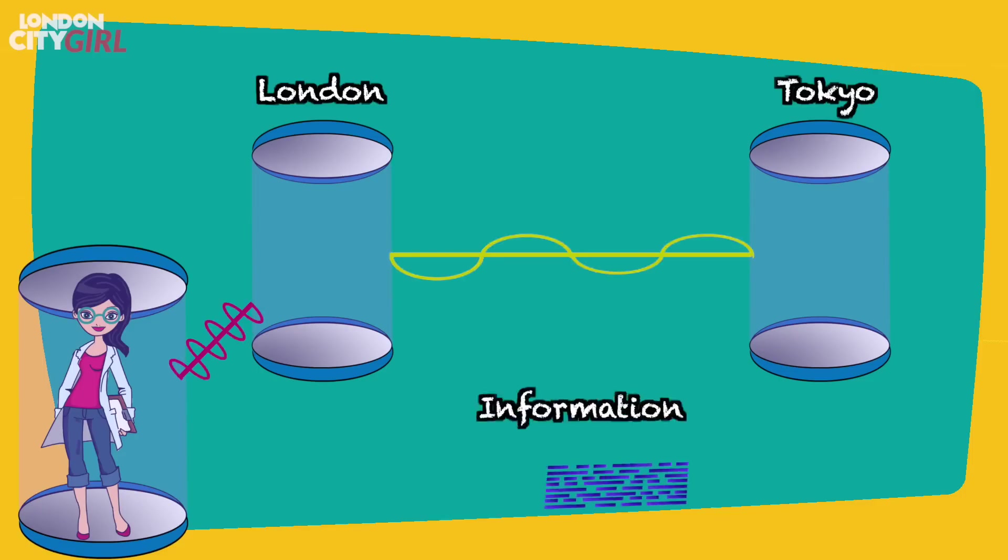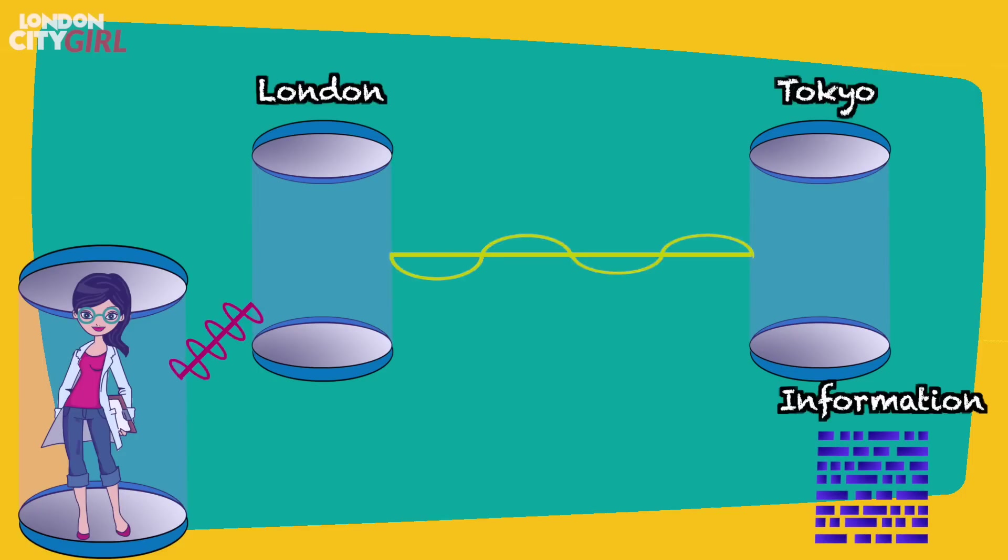This information would be relayed to Tokyo and there the chamber of particles would be manipulated to replicate the quantum state of each of Alice's individual particles, creating an exact replica of Alice.